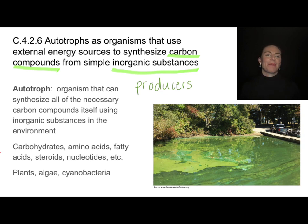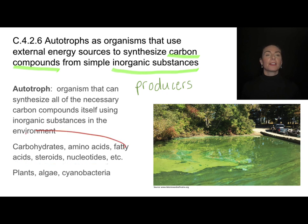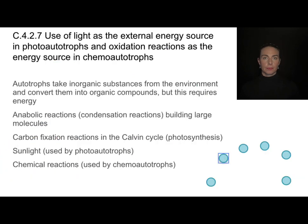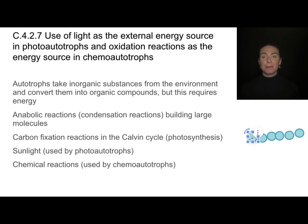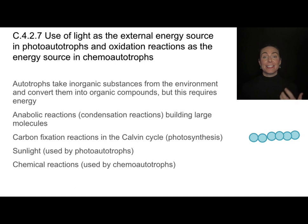Plants can make things like glucose and carbohydrates, but don't forget they can also make amino acids, fatty acids, steroids, and nucleotides — lots of different carbon compounds. When we say they're building carbon compounds, that process is often anabolic. This requires organisms to take small molecules and put them together to make larger, more complex molecules. And as you may know from studying metabolism, anabolic reactions require energy — it requires energy to make these bonds and perform condensation reactions.